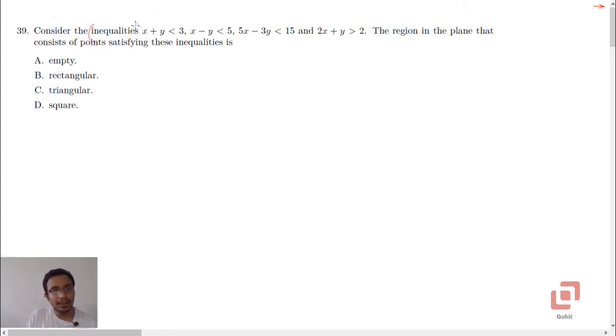Consider the inequalities x plus y less than 3, x minus y less than 5, 5x minus 3y less than 15, and 2x plus y greater than 2. The region in the plane that consists of points satisfying all of these inequalities is: empty, rectangular, triangular, or square.